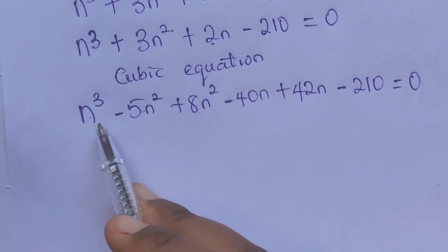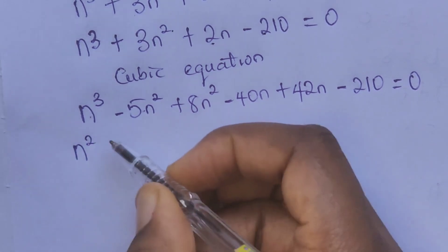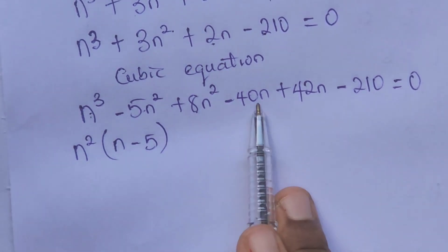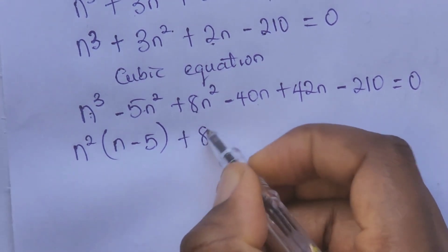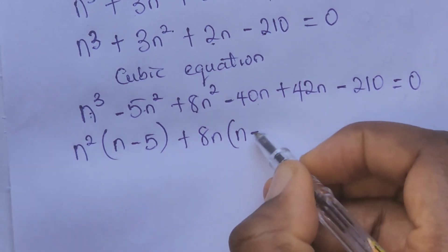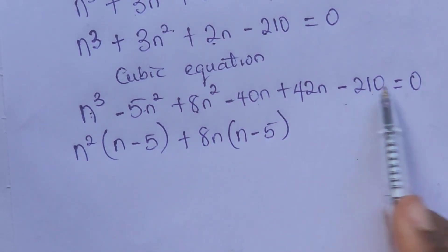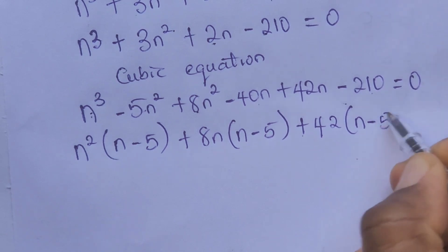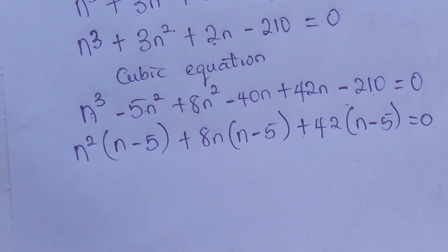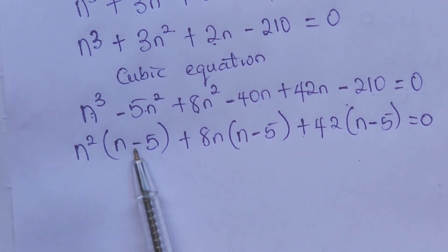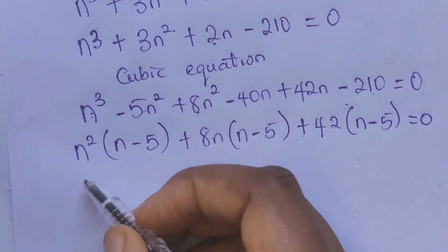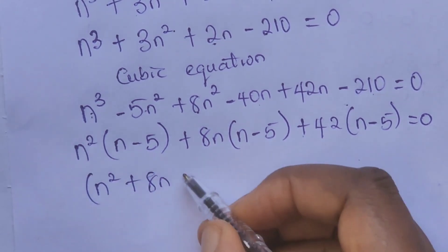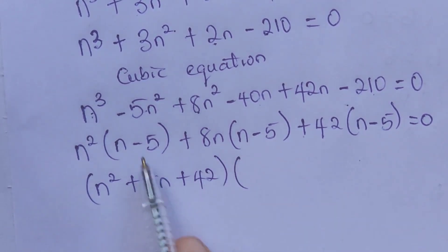From the first two terms we factor out n squared: we get n squared times (n minus 5). From the next two terms we factor out 8n: we get plus 8n times (n minus 5). From the last two terms we factor out 42: we get plus 42 times (n minus 5), all equal to zero. Since the brackets are identical, we pick one and factor: (n squared plus 8n plus 42) times (n minus 5) equals zero.